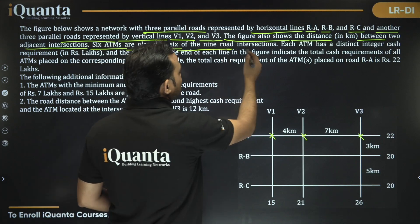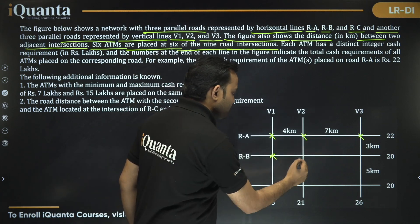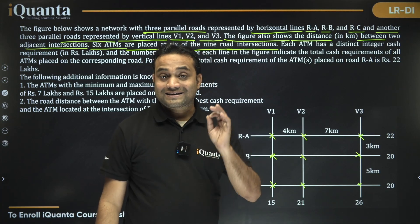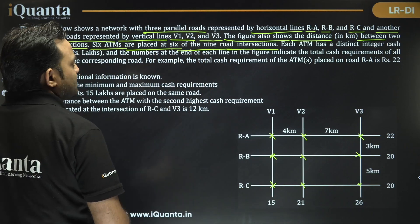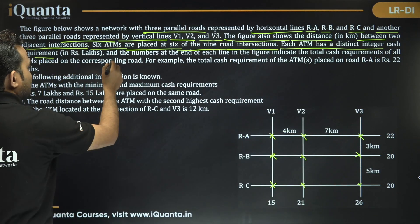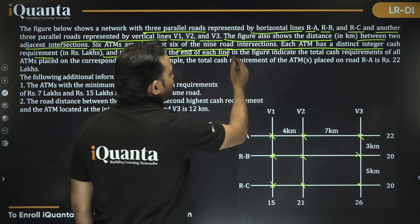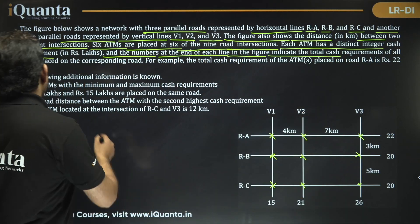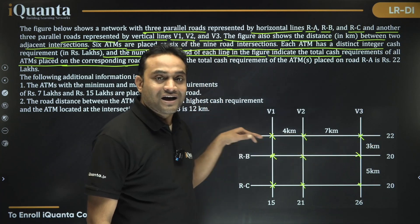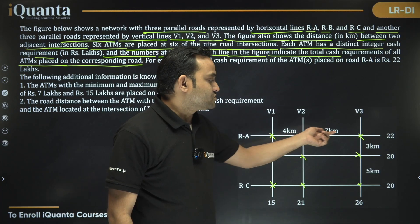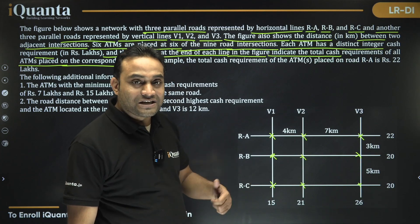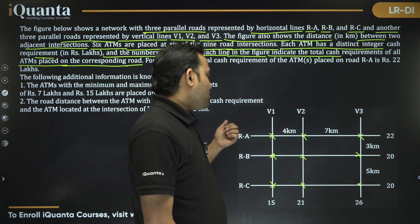Six ATMs are placed at six of the nine road intersections — intersections 1 through 9. Each ATM has a distinct integer cash requirement. The numbers at the end of each line in the figure indicate the total cash requirement of all ATMs placed on that road. For example, the total cash requirement on road RA is 22.